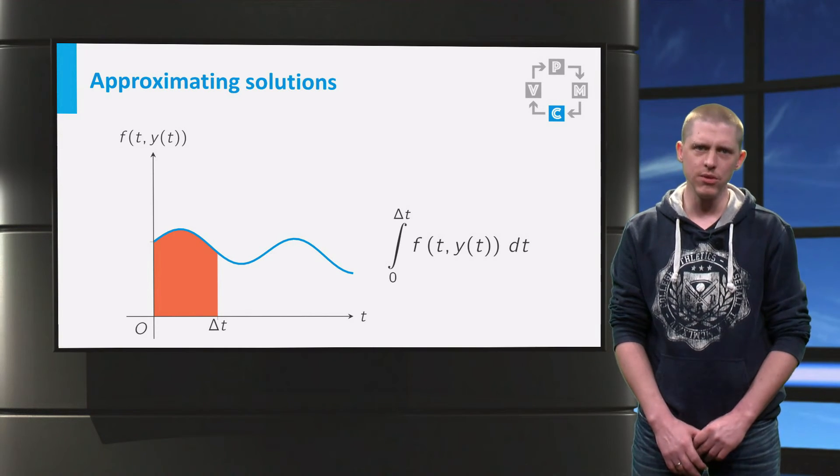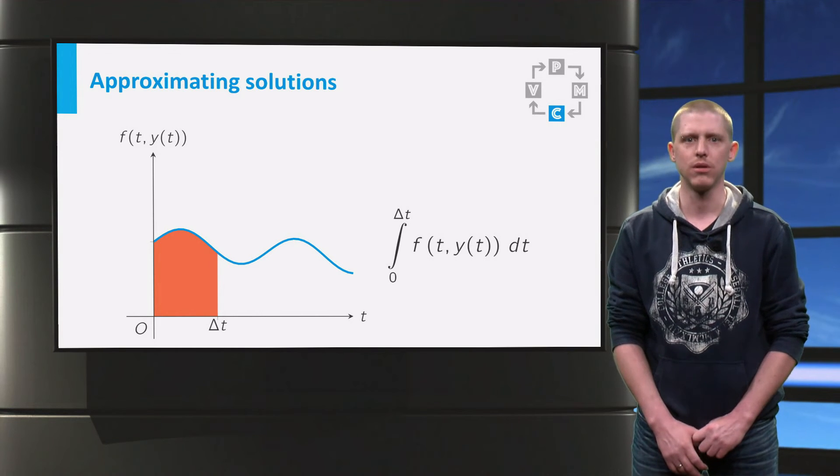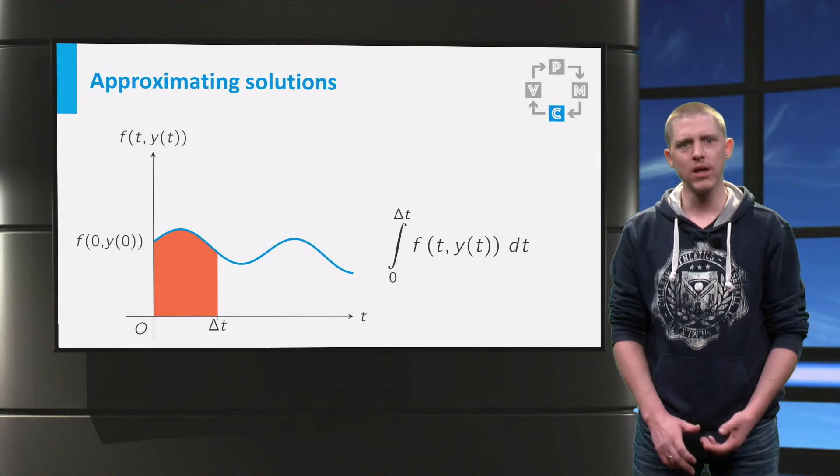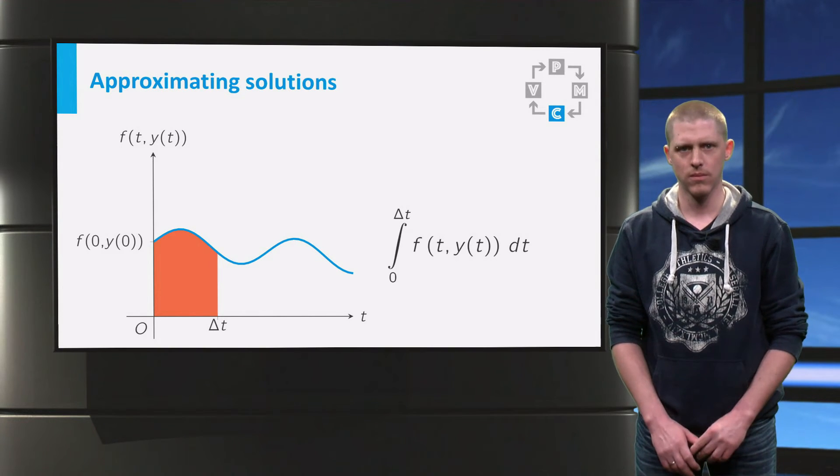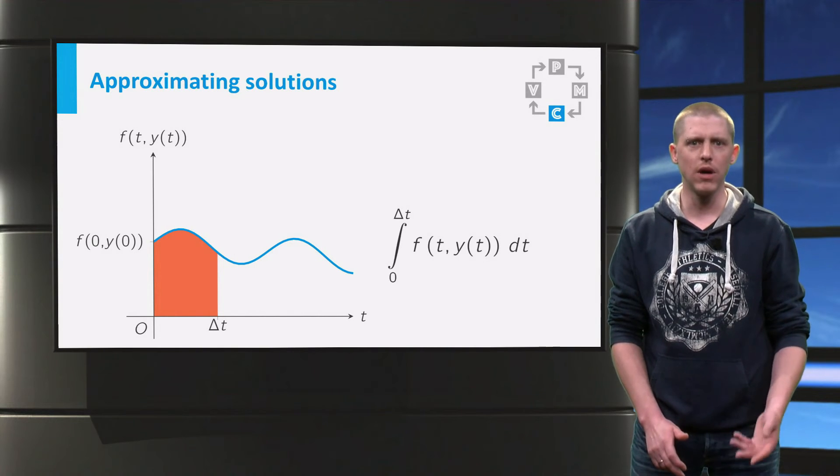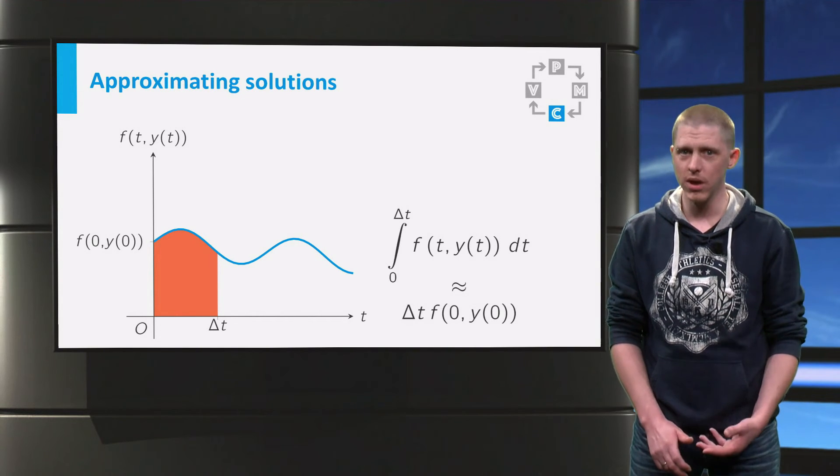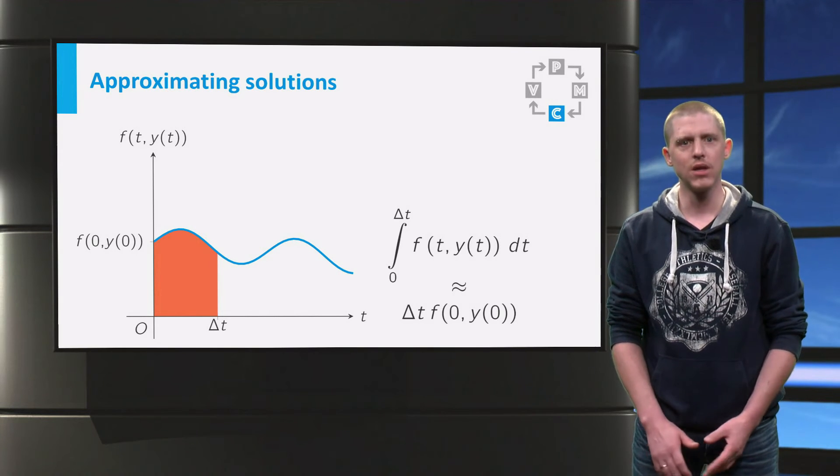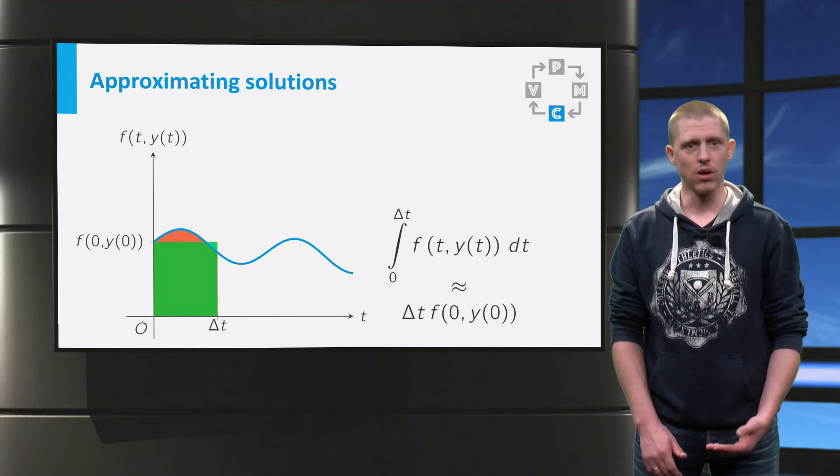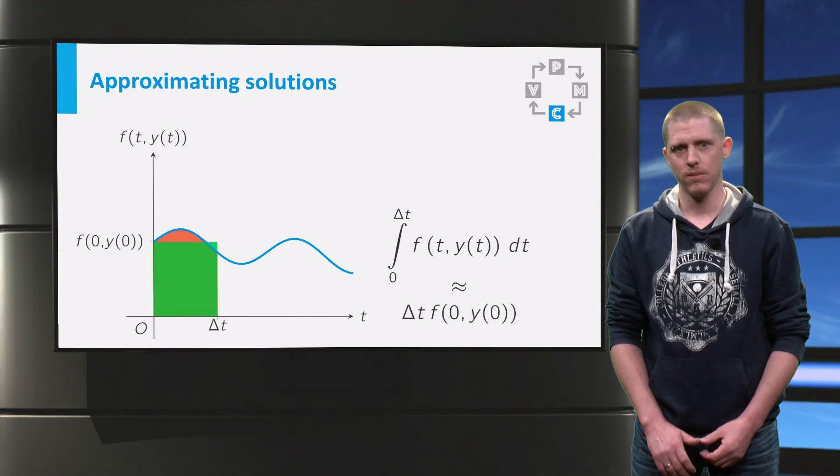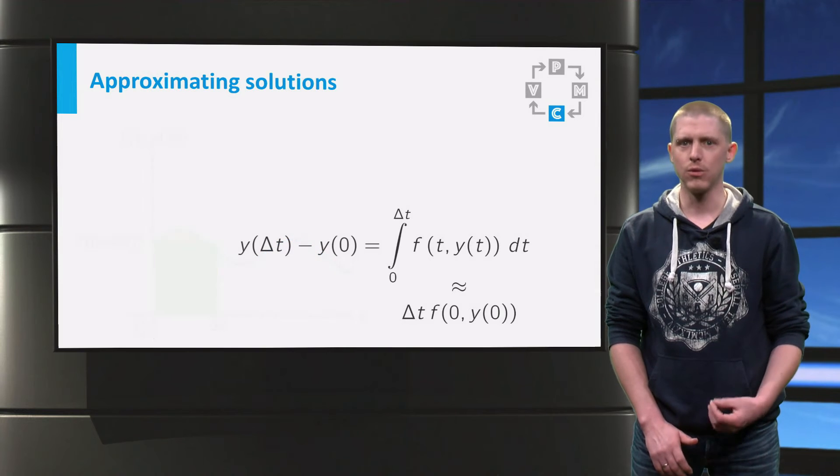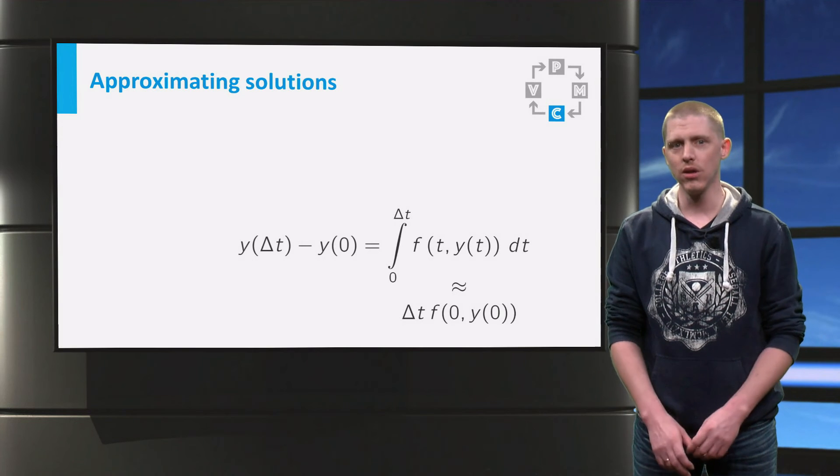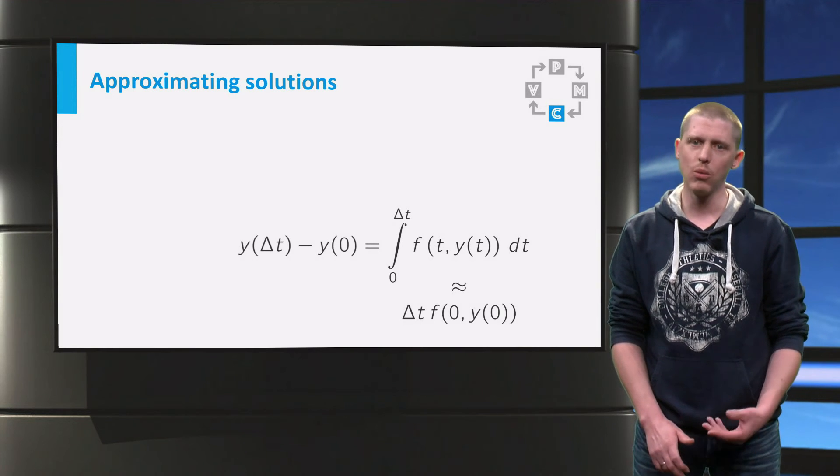At time 0 you do know something, the initial value, y at time 0 equals y₀. For this initial value you can calculate the value of the right hand side function. Because you only know this value of the function f, you can approximate the value of the integral by delta t times f at 0 and y at 0, as also shown in the graph. So what do we have now? We have that y at delta t minus y at 0 is approximately delta t times f at 0 and y at 0.